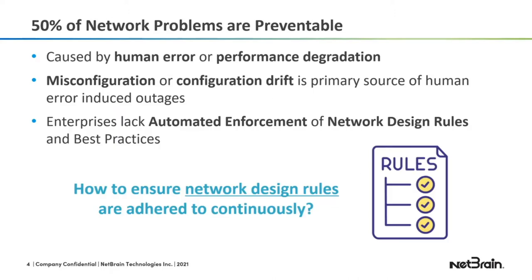We at NetBrain have found that 50% of network problems are preventable — caused by human error or performance degradation. Misconfiguration or configuration drift is the primary source of human error-induced outages. For example, you could have a misconfiguration of access lists in your redundant routers, and you need that ACL symmetry because otherwise during failover you could potentially deny important traffic.